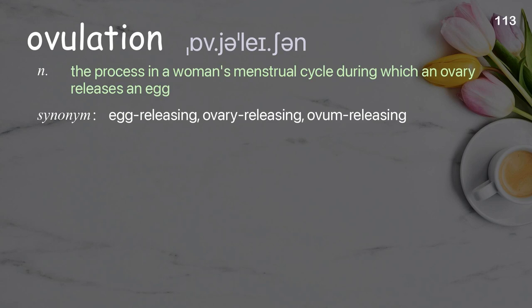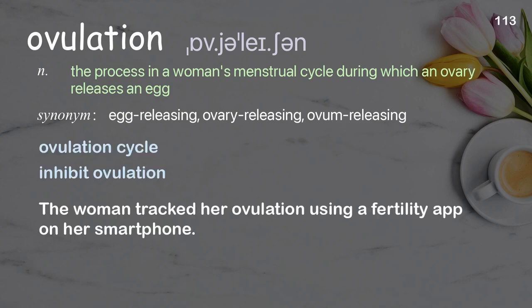Ovulation: the process in a woman's menstrual cycle during which an ovary releases an egg. Examples: inhibit ovulation. The woman tracked her ovulation using a fertility app on her smartphone.